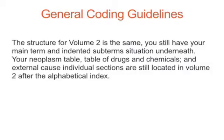The structure for Volume 2 is the same. You still have your main term and indicated subterms underneath, your neoplasm table, table of drugs and chemicals, and external cause. Individual sections are still located in Volume 2 after the alphabetical index.